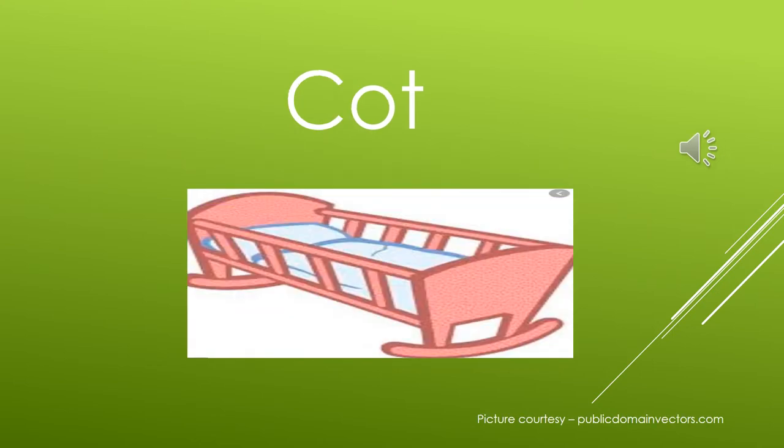The sound of C is 'ker', and then OT — cot. Can you see the small bed? Yes, basically small babies use it. It is called a cot.